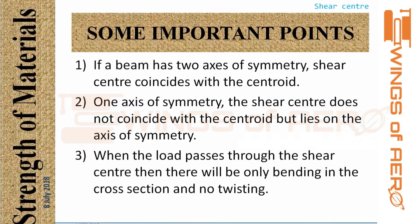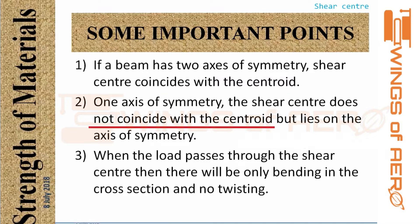If a beam has two axes of symmetry, the shear center and the centroid will coincide at the same point. If a beam has symmetry in only one axis, the shear center does not coincide with the centroid, but it lies on the axis of symmetry. Always remember: the shear center lies on the axis of symmetry, but whether it coincides with the centroid depends on how many axes of symmetry exist.